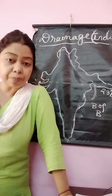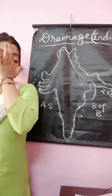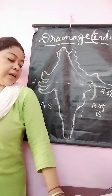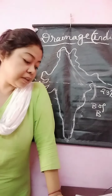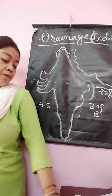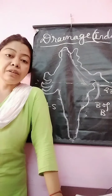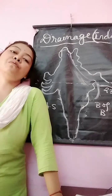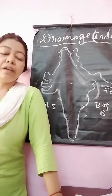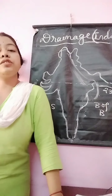Western Disturbance is a cyclonic disturbance that enters India from the western or northwestern part of our country, from the Punjab and Haryana side. It comes from the Mediterranean region and is responsible for rainfall during the winter season. These are cyclonic in nature, and the winter rainfall we experience is caused by western disturbances.